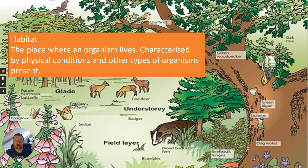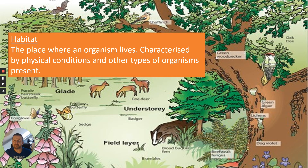Habitat. The place where an organism lives, characterised by physical conditions and other types of organisms present. In this case, this is a woodland scenario, so we have a habitat of woodland and also grassland. It will be characterised by certain physical abiotic conditions and all the types of organisms that live in that area.